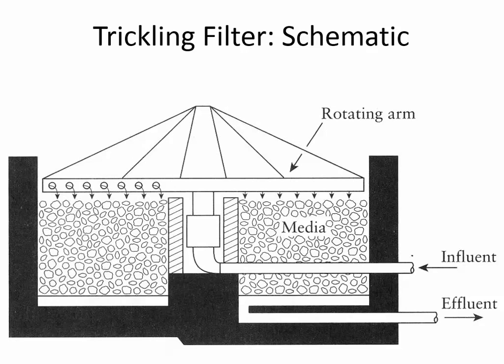Let's look at the full process from beginning to end. Raw sewage comes in, goes through rack screening to remove debris that would damage pumps. The grit chamber is where heavy particles like sand and broken glass settle down, and a clear liquid leaves the grit chamber entering the primary settling tank. In the primary clarifier, whatever is not dissolved settles to the bottom and is sent to digest the sludge. Secondary treatment is where the magic happens — in this case, we've replaced the aeration basin with the trickling filter.